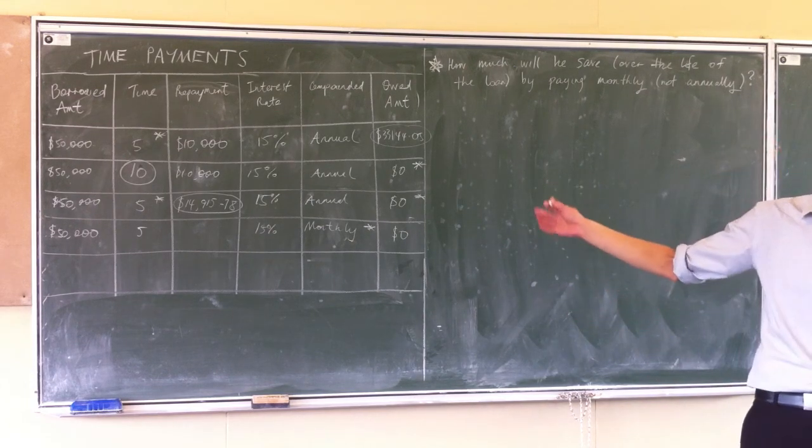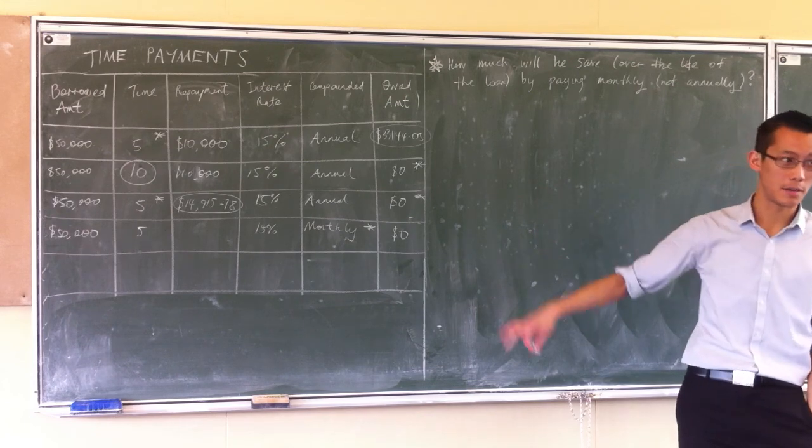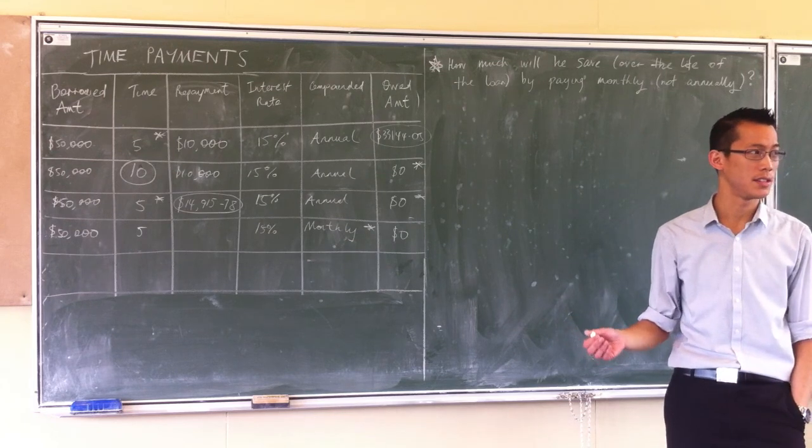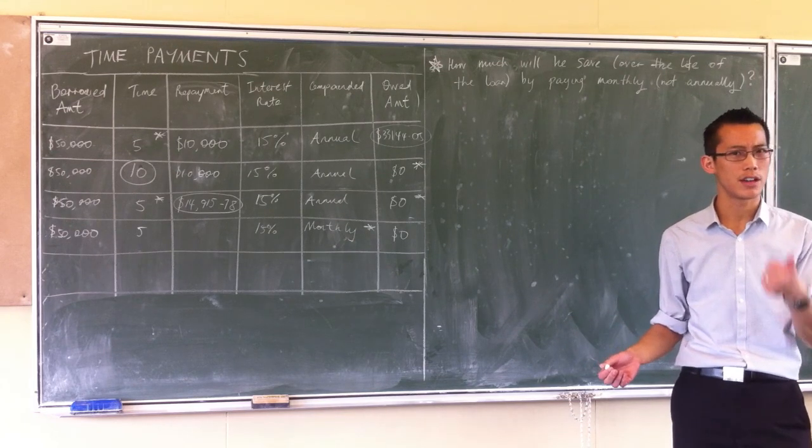Now, all we've done from the previous question is we've changed it from yearly to monthly. Now, what that means is for the numbers, there's going to be some significant differences. It's a little bit like we're going to do integration.